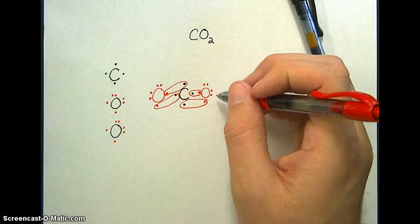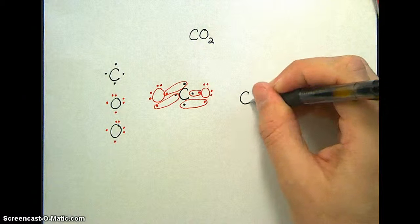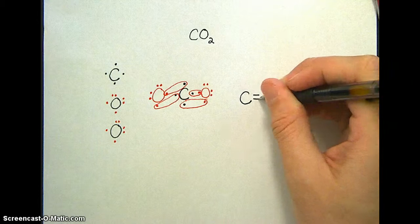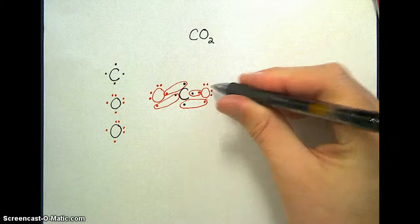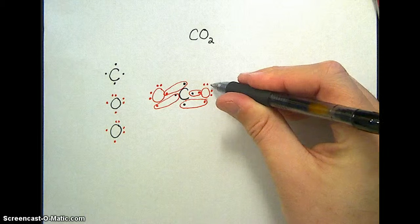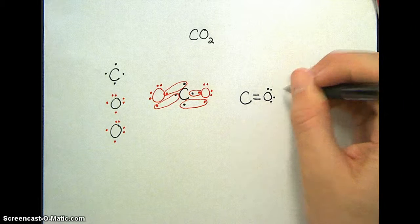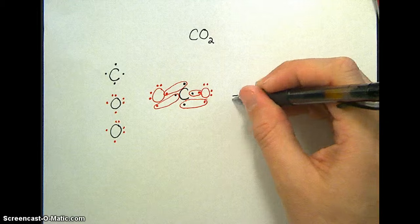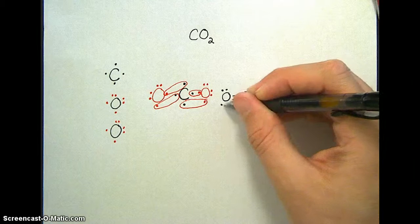I can neaten up this structure quite a bit. All I have to do is draw my carbon. And instead of a pair of dots, I'm going to use a single line. I have another pair of dots being shared. There's a single line. And here's my oxygen. This pair of electrons right here is still hanging out on my oxygen. Still has two pairs, as a matter of fact. Same thing is true with the other side. A double bond to the oxygen and two pair of electrons left behind.